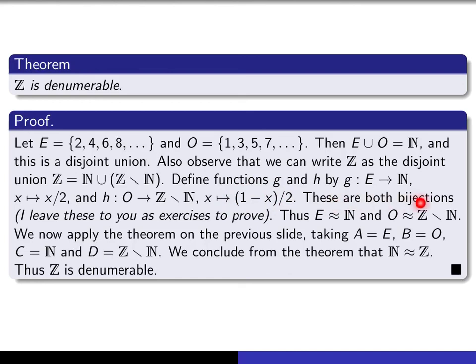Then I merely state that they are both bijections, but I'm going to leave it for you as an exercise to prove, but I think it's a good exercise, but pretty elementary. So it follows from that that these two sets, E and N, have the same cardinality, and O and Z minus N have the same cardinality, and therefore by the theorem on the previous slide, if we take the unions, the union of E with O has the same cardinality as the union of N with Z minus N, and that just says that N and Z have the same cardinality.